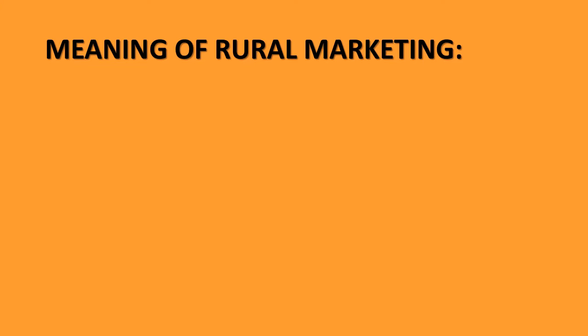Meaning of rural marketing. What do you mean by the word 'rural'? For learning any rural marketing, first we need to understand the meaning of the word rural. According to the National Sample Survey Organization (NSSO), rural means an area with a population density of up to 400 per square kilometer, villages with clear surveyed boundaries but no municipal board, and a minimum of 75% of male working population involved in agriculture and allied activities. The RBI also defines rural area as those areas with a population of less than 49,000.